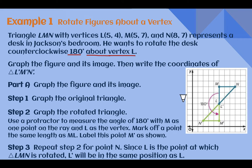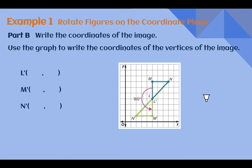Imagine if you planted your foot on the ground and turned — the foot you're rotating around stays in the same place while the rest of your body moves around it. So if we graph our figure, M from L to M was rotated 180 degrees, now facing the opposite direction. L to N rotated 180 degrees, now facing the opposite direction. Then we connect M with N and we have our rotated triangle. We can write the coordinates of the image: L' is at (5,4) — the point we rotated about, so it's unchanged. M' is at (5,1) and N' is at (2,1).